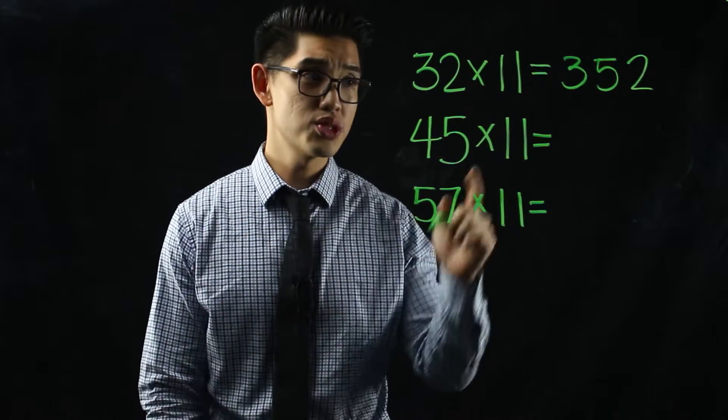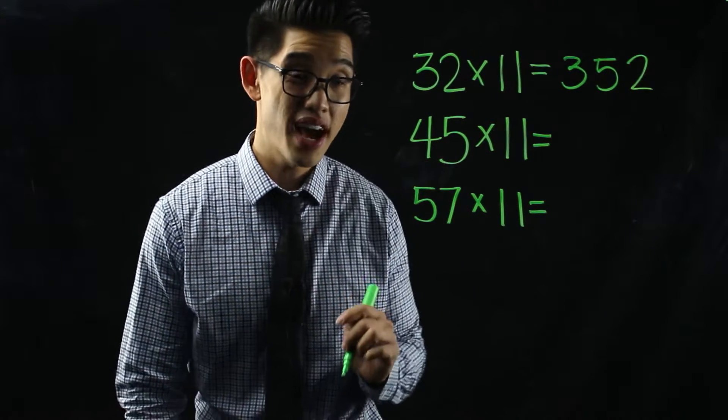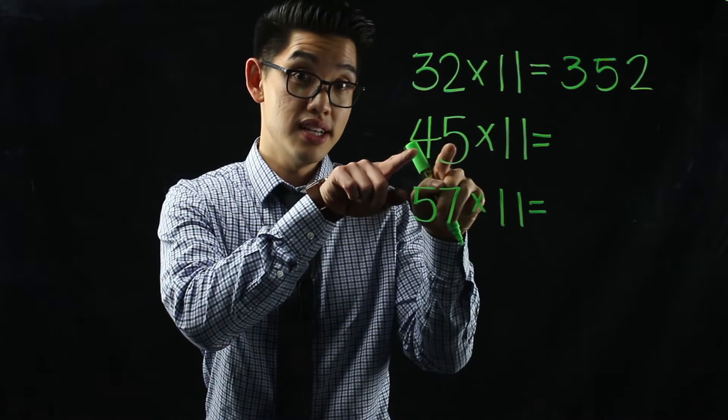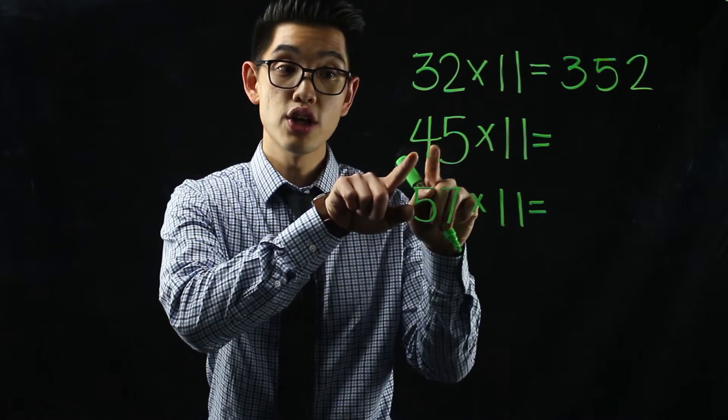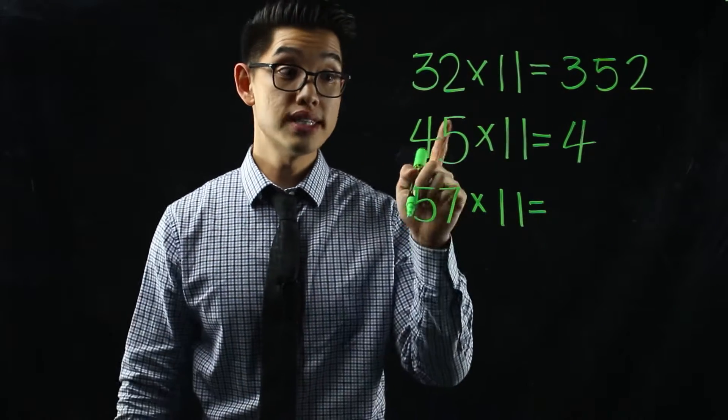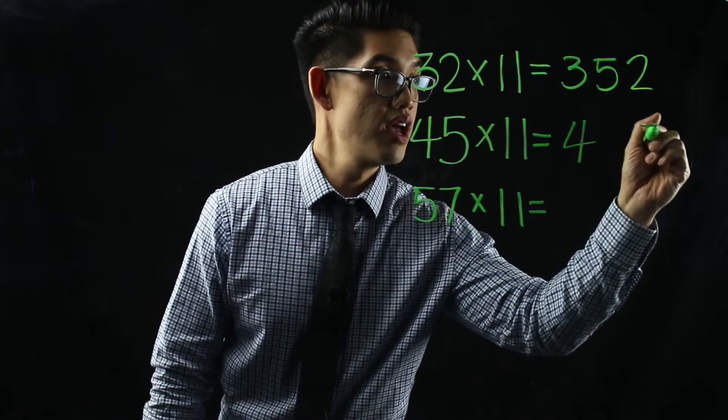Now the reason I know it's 352 and how I did it so fast is because the trick is, all you have to do when you multiply these two numbers together is take a look at the first digit, which is the three, you're gonna write down three. Then you're gonna take a look at the last digit, which is two, and write down two.